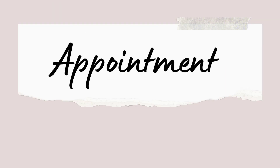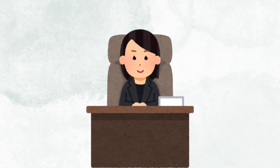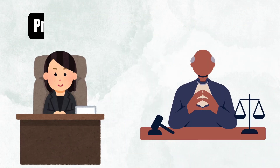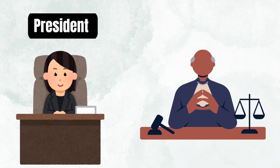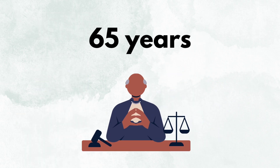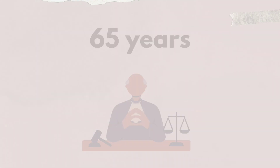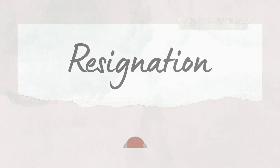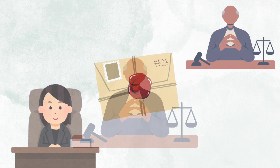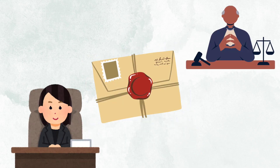Appointment of Judges: Every judge is appointed by the President and they serve until they turn 65 years old. Resignation: A judge can resign by writing to the President.